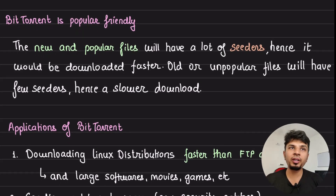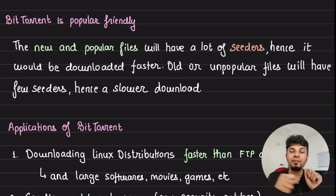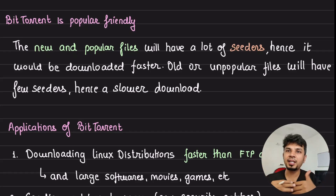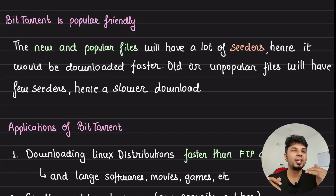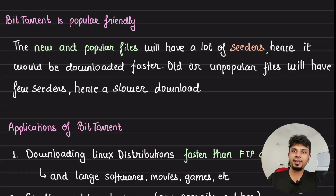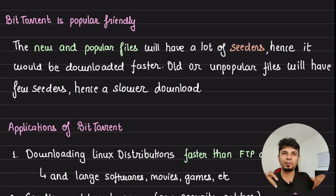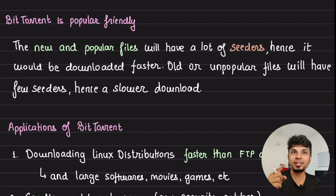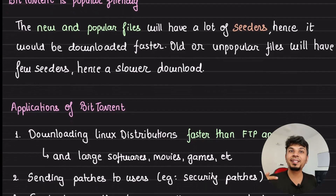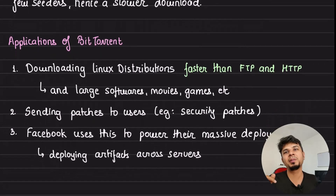BitTorrent is very popularity-friendly, meaning new and popular files will have a lot of seeders. For example, a new version of an OS just released has a high chance of many people wanting to download it. Ubuntu and Debian provide official torrent distributions with many seeders, so whoever wants to download can talk to them and get the files fast. So when a file is new and popular you get very fast downloads. But once it becomes old or unpopular, you have fewer seeders and slower downloads.